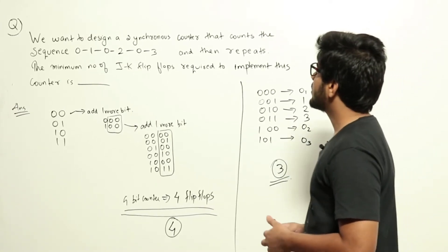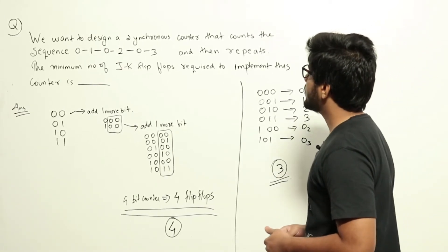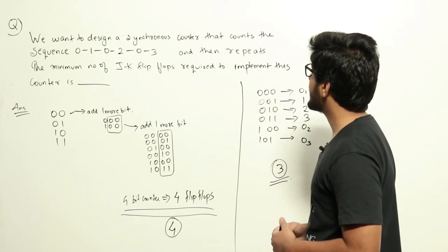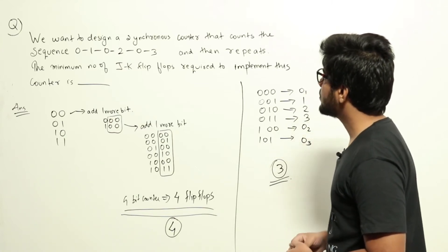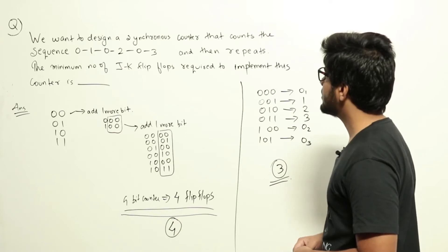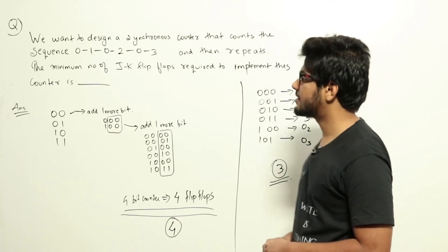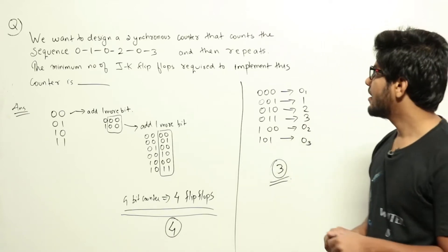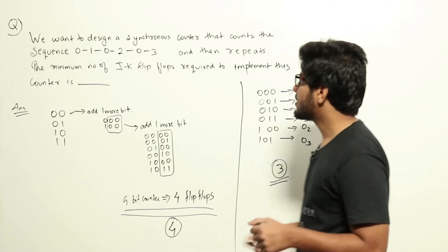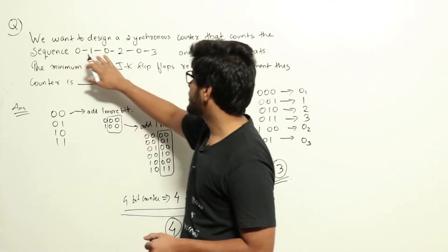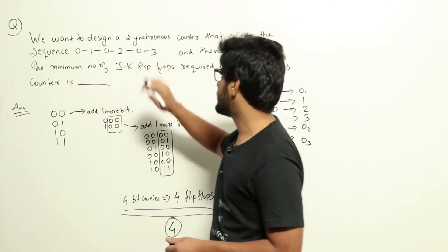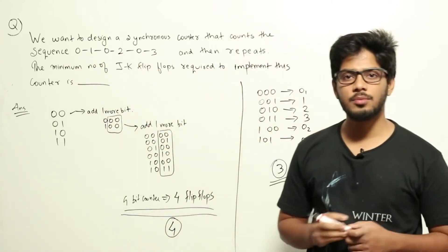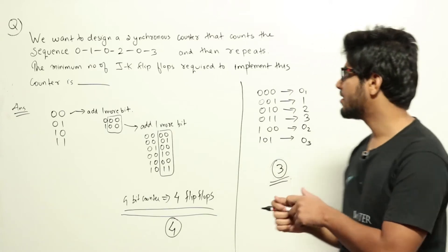We want to design a synchronous counter that counts the sequence 0, 1, 0, 2, 0, 3, and then repeats. The minimum number of JK flip-flops required to implement this counter is the question. This is from sequential circuits in digital logic design — they ask us to design a counter counting this sequence and find the minimum number of JK flip-flops needed.